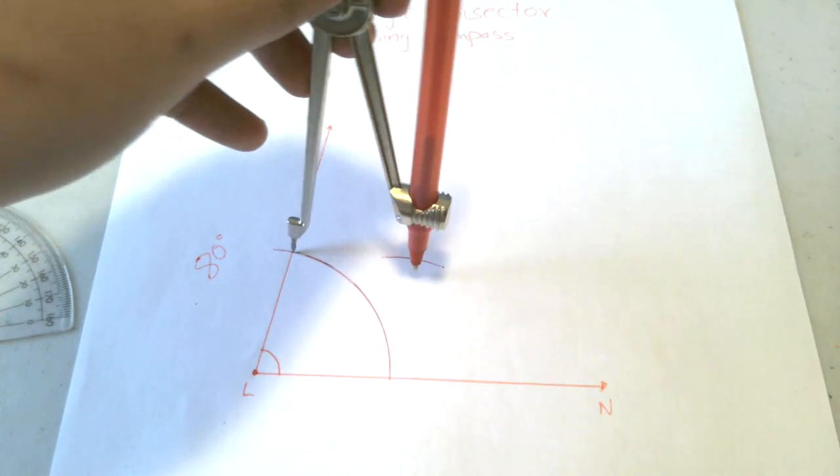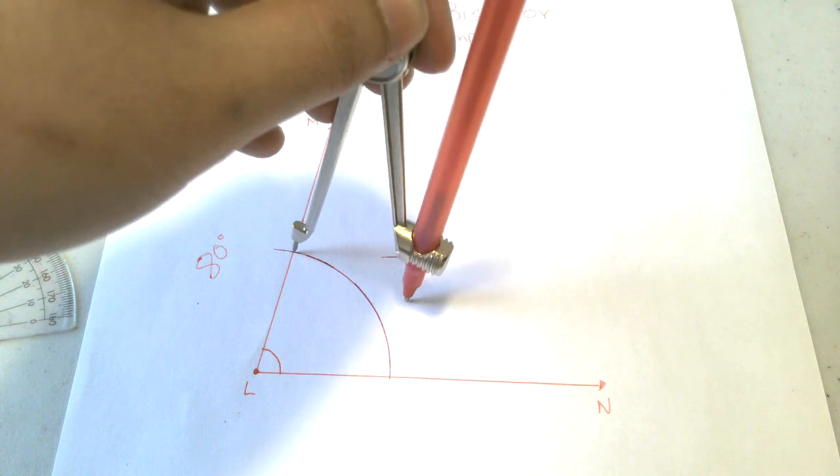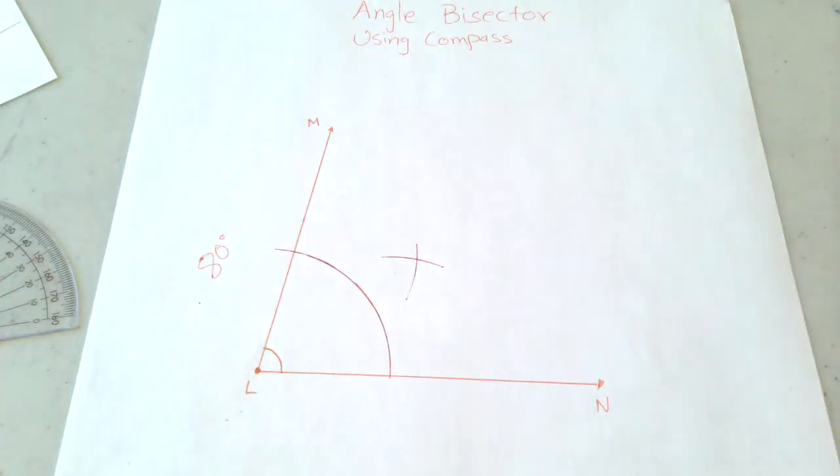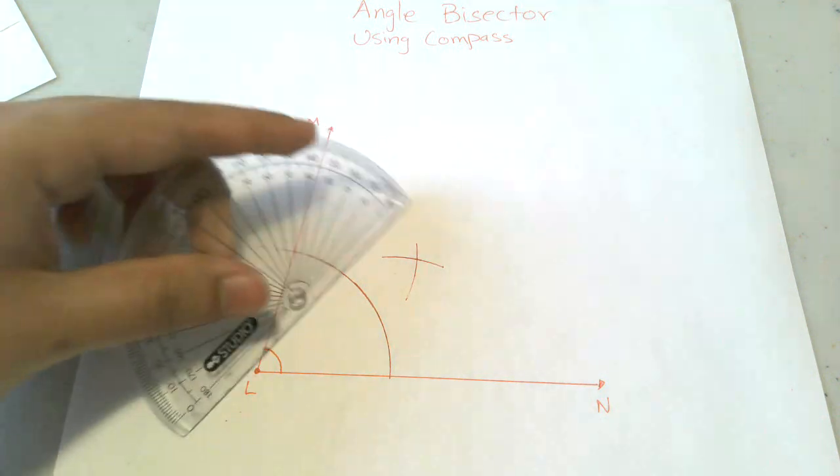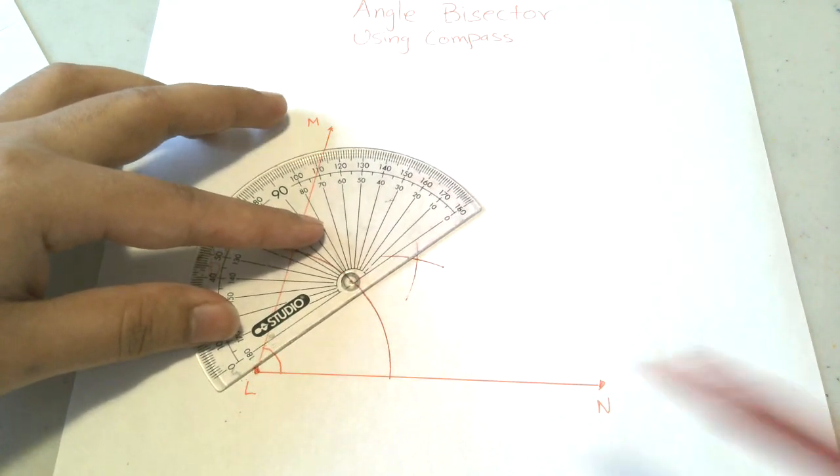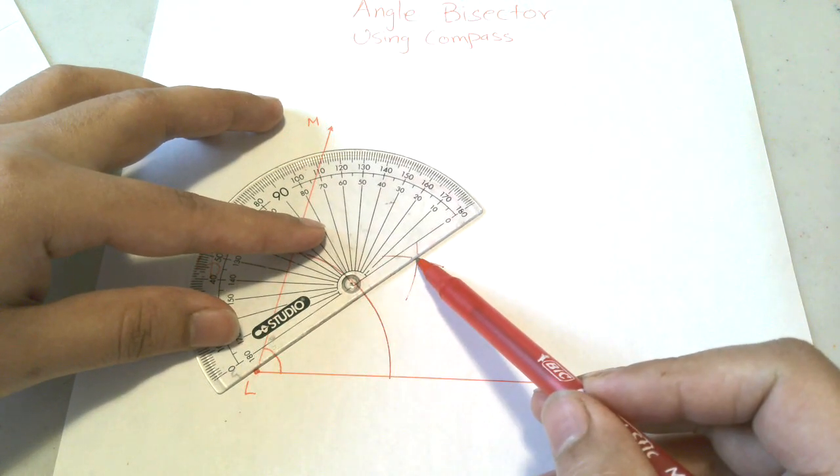Now, you're not measuring the angle if you're finding compass difficult. Now you have to draw a line segment that passes through this point over here.